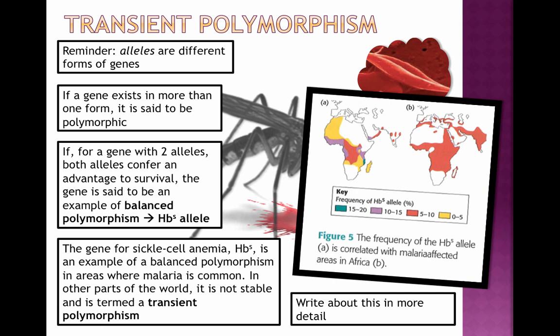Sickle cell anemia is a well-known example. Normally it's harmful because it reduces red blood cells' ability to carry oxygen and causes the cells to take a sickle shape, leading to blood clots in arteries, veins, and capillaries. However, being a carrier for this trait gives an advantage in communities stricken with malaria — carriers have increased natural immunity to malaria, which increases survival rates. That's why sickle cell is a classic example of balanced polymorphism.